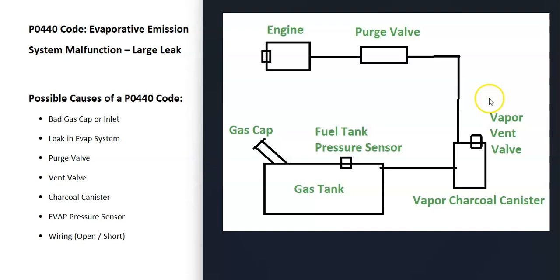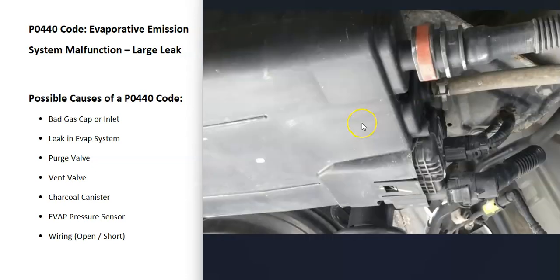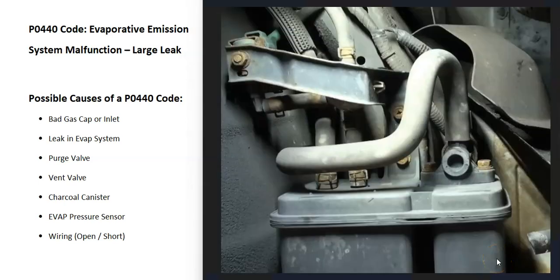Another valve that can go bad is the vent valve, usually located on or right next to the charcoal canister, which is underneath the vehicle near the gas tank. Just like the purge valve, if the vent valve gets stuck open it can cause a leak and issues. There are different ways to test the vent valve — if you have a good OBD2 scan tool, quite often there's an option to enable and disable the vent valve and you can hear it opening and closing.